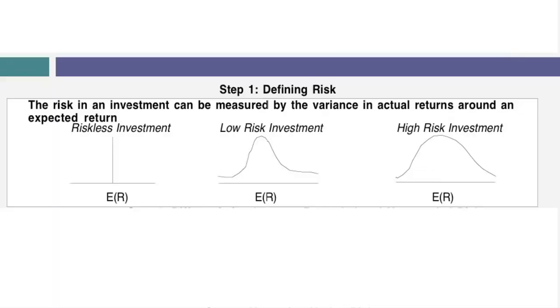Here's how I think about risk and return models in finance. In the first step, we define risk as the deviation of actual returns around an expected return. For example, if you have a one-year time horizon and you buy a one-year U.S. Treasury bond — assuming the U.S. Treasury has no default risk — and the yield is half a percent, at the end of the year the answer is always going to be half a percent. That is a truly riskless investment where the actual return is always equal to the expected return.